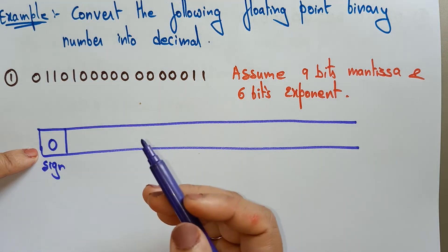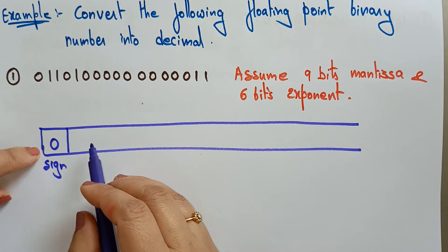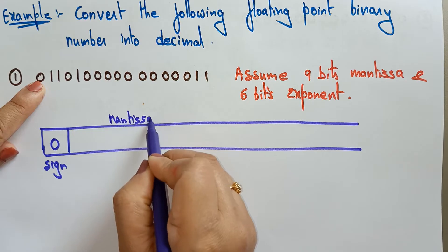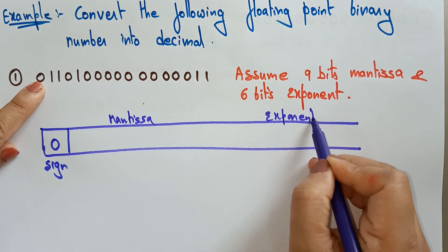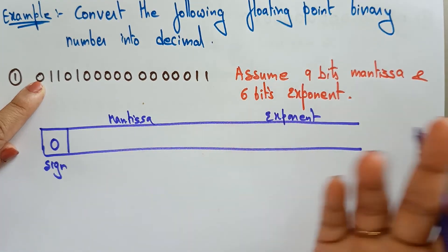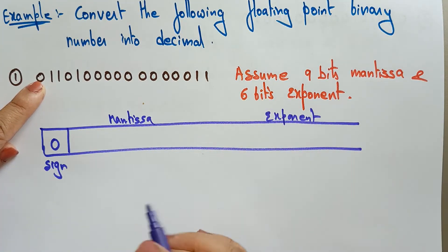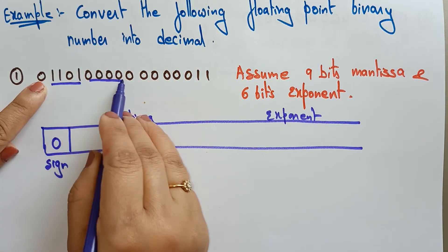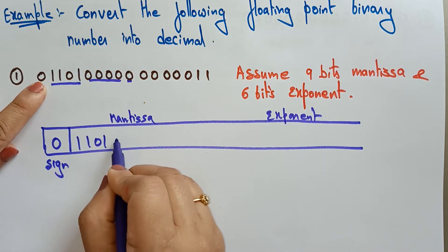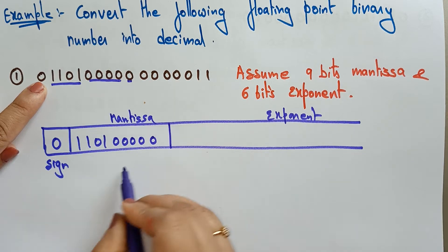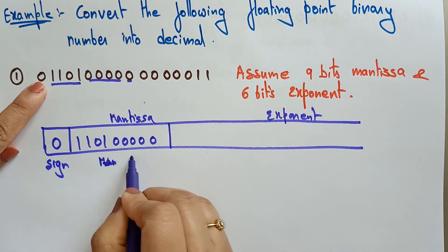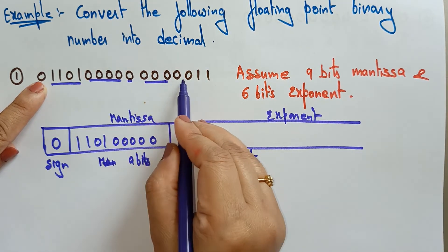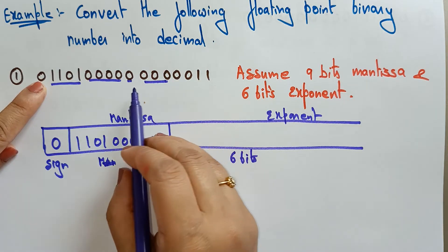After the sign bit comes the mantissa. The mantissa here is nine bits total. Take the nine bits: 1 1 0 1 0 0 0 0 0. Then the remaining six bits are the exponent.